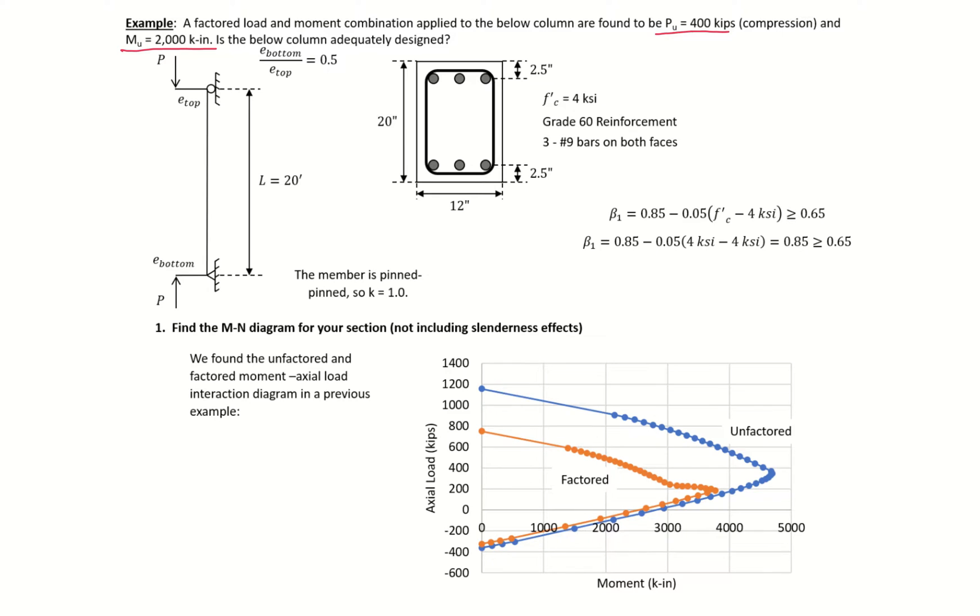We want to know if this column is adequately designed. We have our cross section, 12 by 20 inches, 4 ksi concrete with three number 9 bars on the top and bottom. Grade 60 steel so F_y equals 60 ksi.